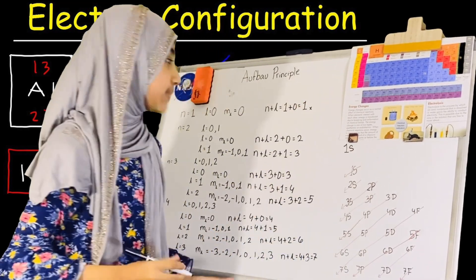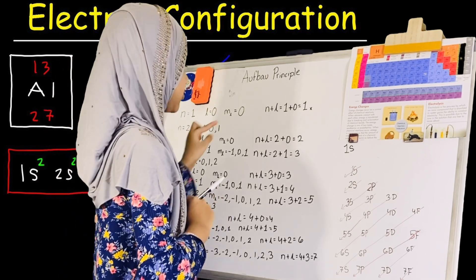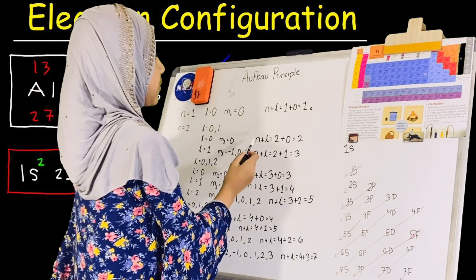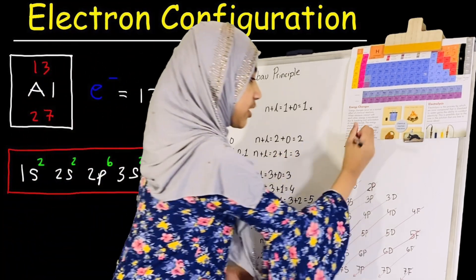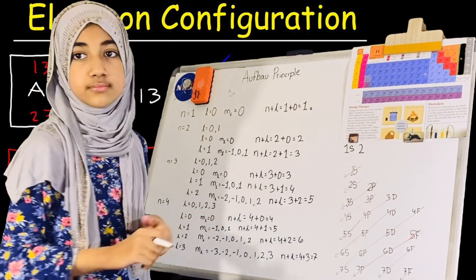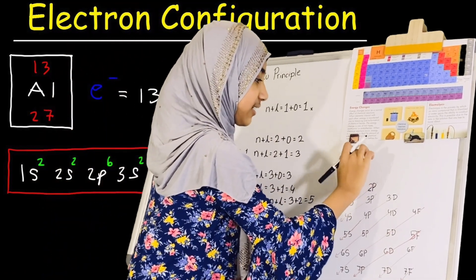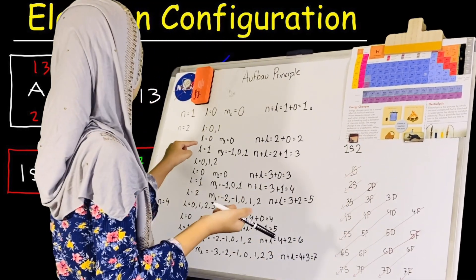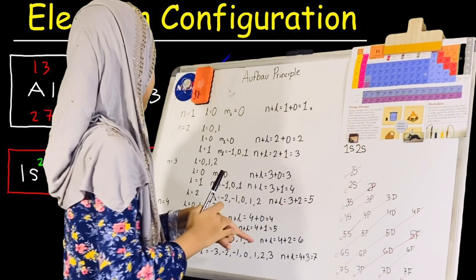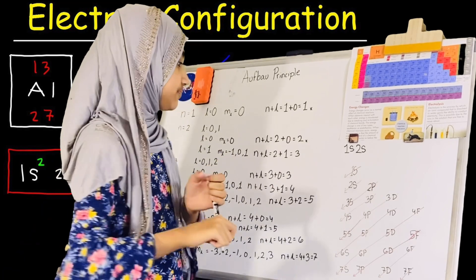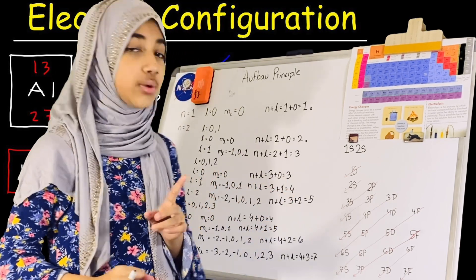We place a little X next to that, meaning we are done with it. The second least sum is 2. That corresponds to n equals 2, l equals 0, which is again an s orbital, so we write 2s. We place an X next to that as well. The next sum is 3, but here we have a small problem.